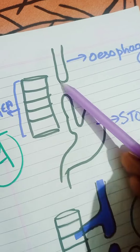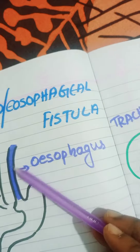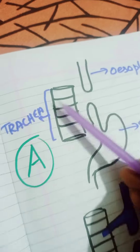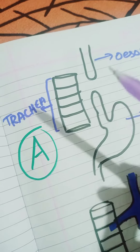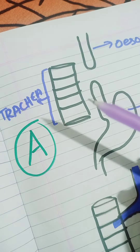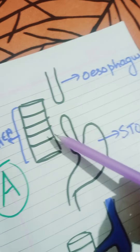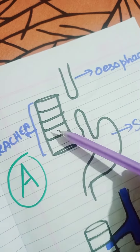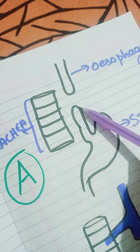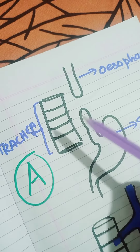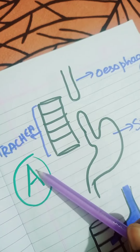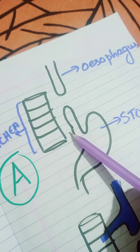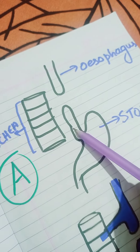Atresia comes from two blind-ending tubes. Both ends of the esophagus are atretic — they do not connect. This is called Type A atresia: pure esophageal atresia with no fistula.